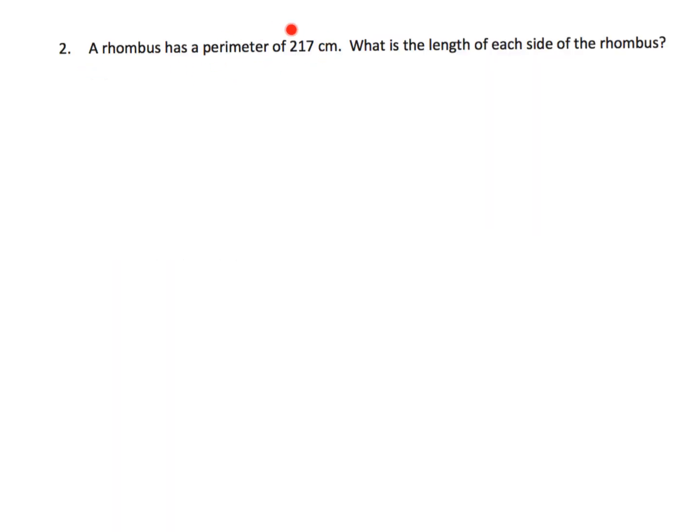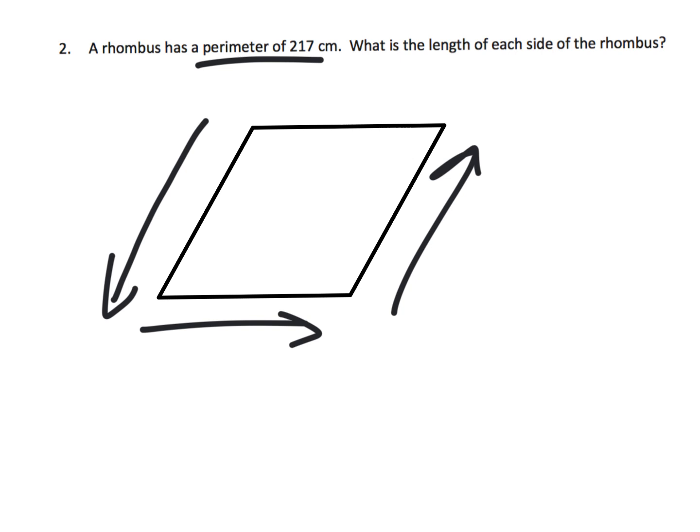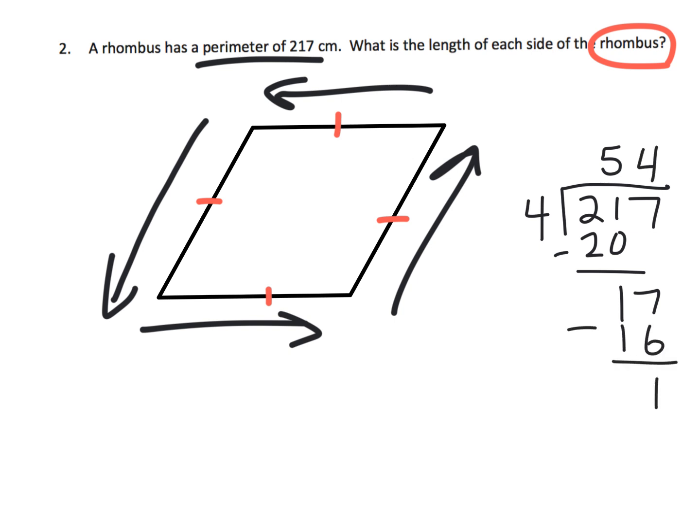Here it says a rhombus has a perimeter of 217 centimeters. What is the length of each side of the rhombus? Let's start with a rhombus. We know that the perimeter is 217. That means if we were to add this side plus this side plus this side plus this side, we would get 217. The rule for it being a rhombus is that all four sides are equal. So if we know the perimeter is 217, we could divide by four to figure out the length of each one of those sides. I get remainder of one, so that's going to be 54 and one-fourth. Each side is 54 and one-fourth centimeter.